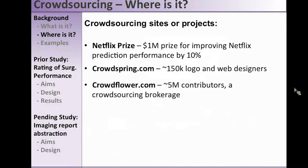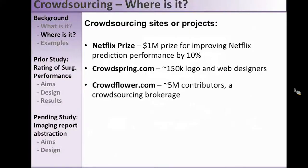Another example is crowdspring.com — they crowdsource design work. If you've got an idea and want a logo, you can go there, pay around $300, and within days get up to a hundred different logos to choose from. They have about 150,000 people in their crowd. CrowdFlower.com is like the brokerage of all crowdsourcing websites — it aggregates across places like crowdspring and Amazon mTurk, and claims five million contributors worldwide willing to do tasks.